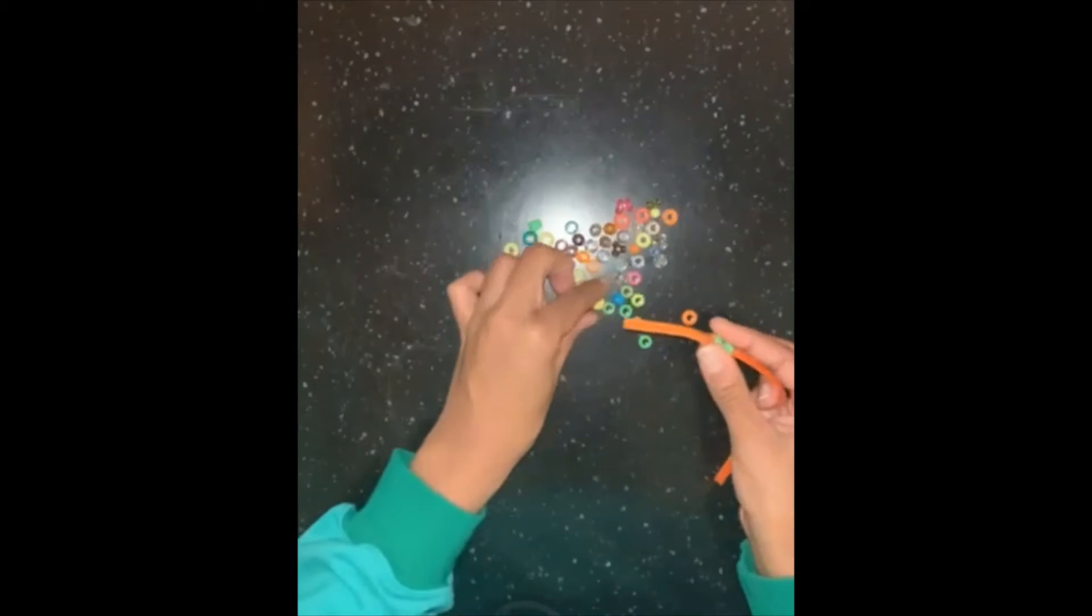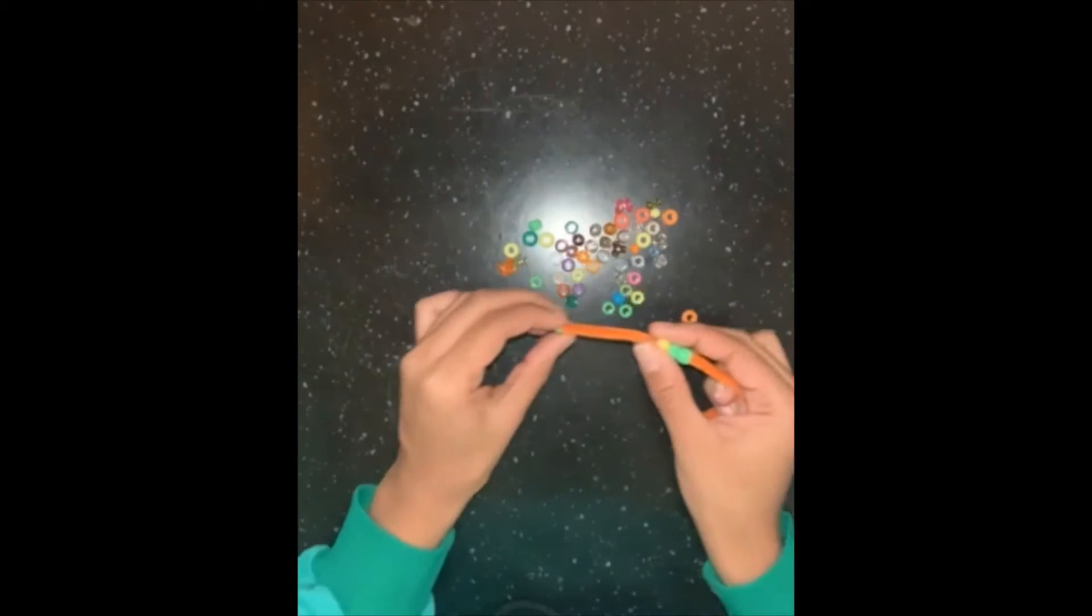Now to begin, you are going to measure your wrist. If your pipe cleaner is a little bit bigger than your wrist, you're just going to cut it. Once you have cut it, then you're going to start threading the beads on your pipe cleaner.